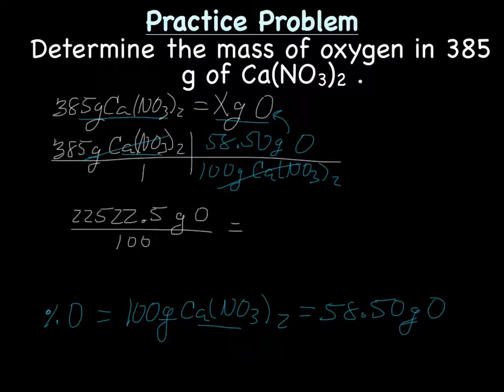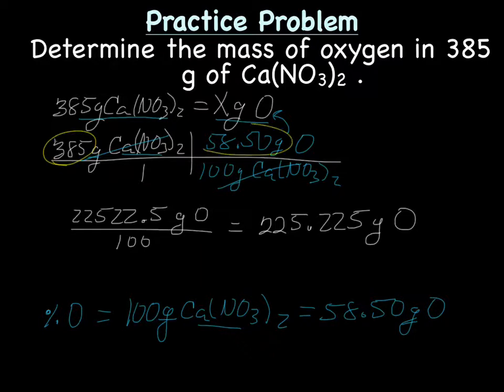And now we divide, giving us 225.225 grams oxygen. We've got to go back and look at our sig figs. We have 3 and 4, and that 100 is just a strength given. So, it's just the 3 and the 4, so we don't count this as sig figs. We have 3, so our final answer is going to be 225 grams oxygen.